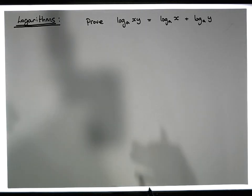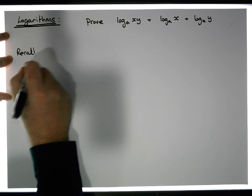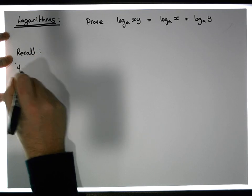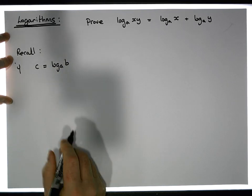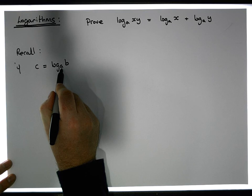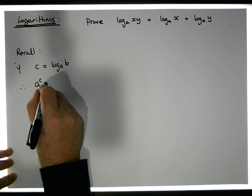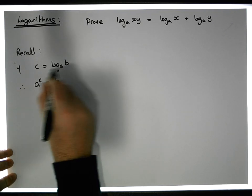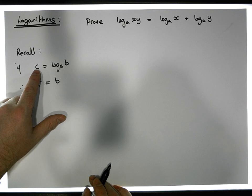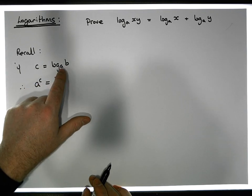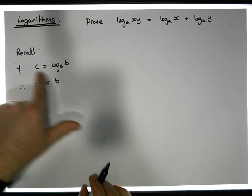Let's recall what a logarithm actually means. If c is equal to the log of b to the base a, what that really means is that c is the number we should raise a to the power of to get b. In other words, a to the power of c is equal to b. So the log represents the exponent — the power we must raise a to in order to get b.